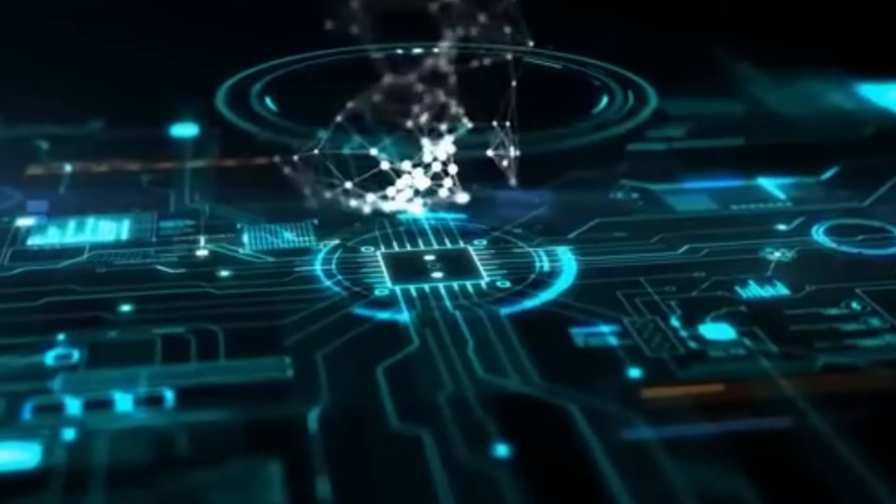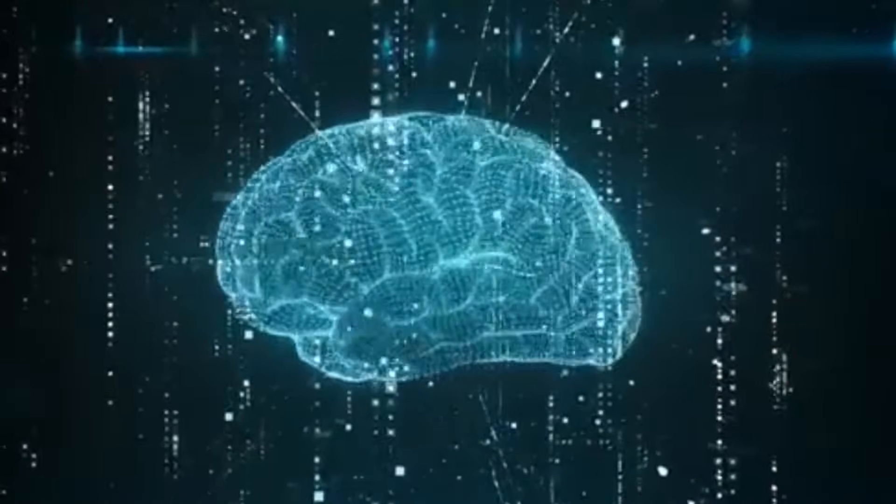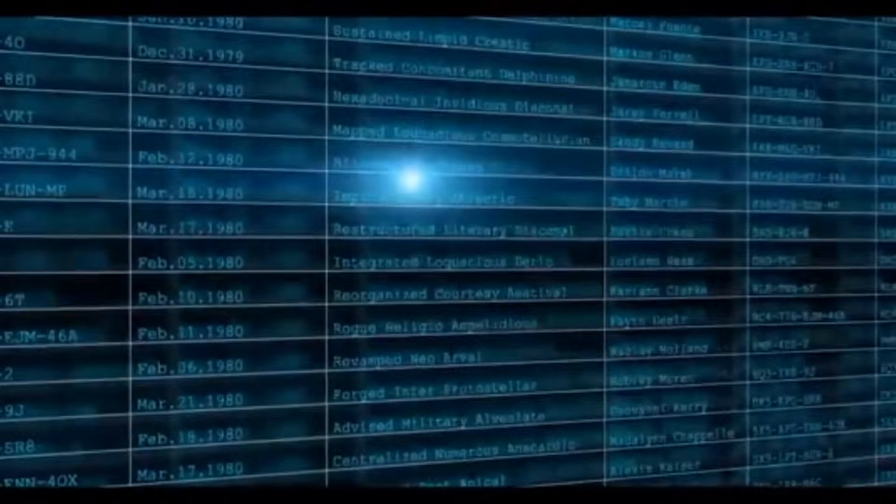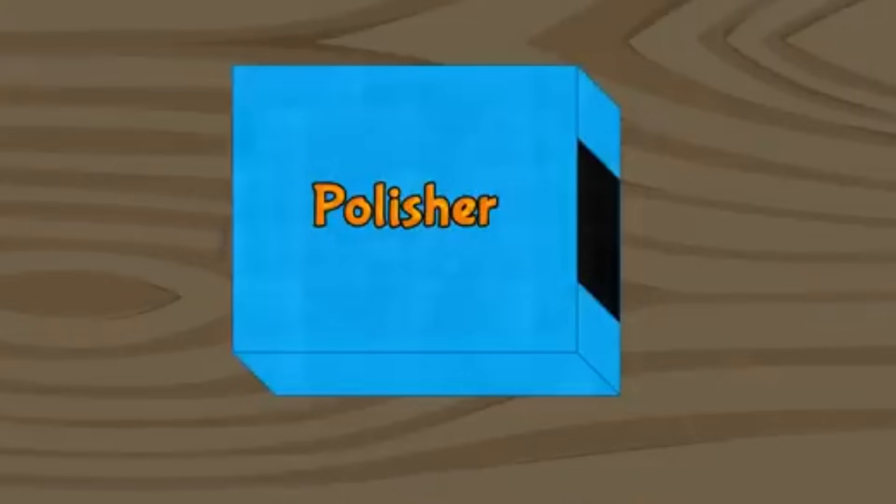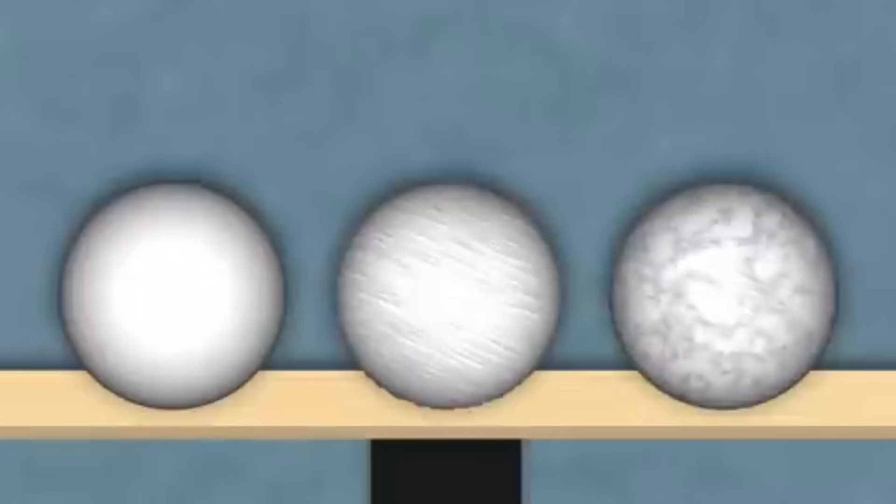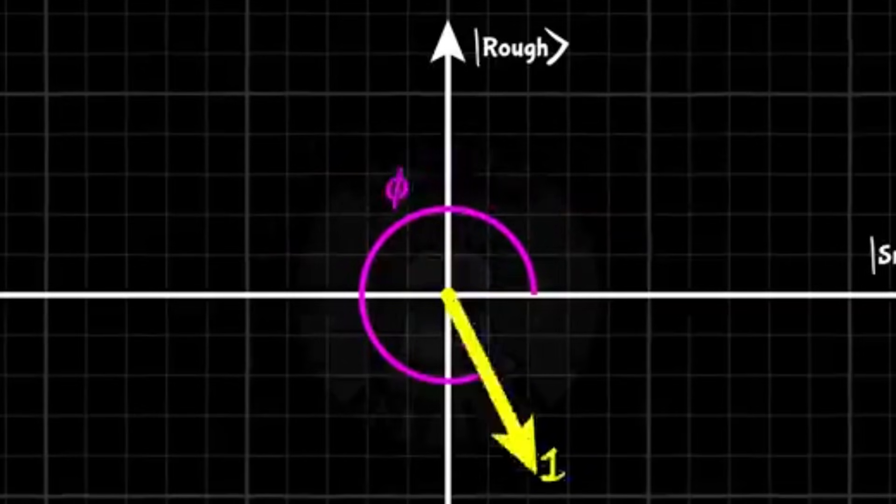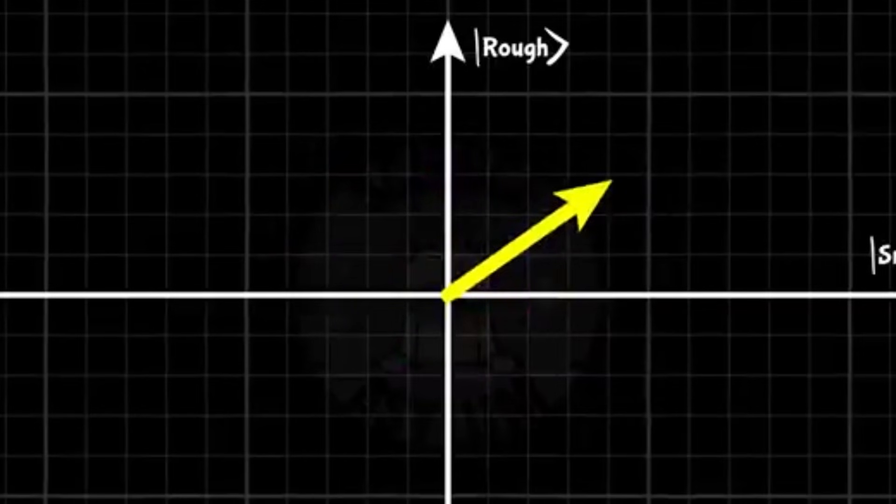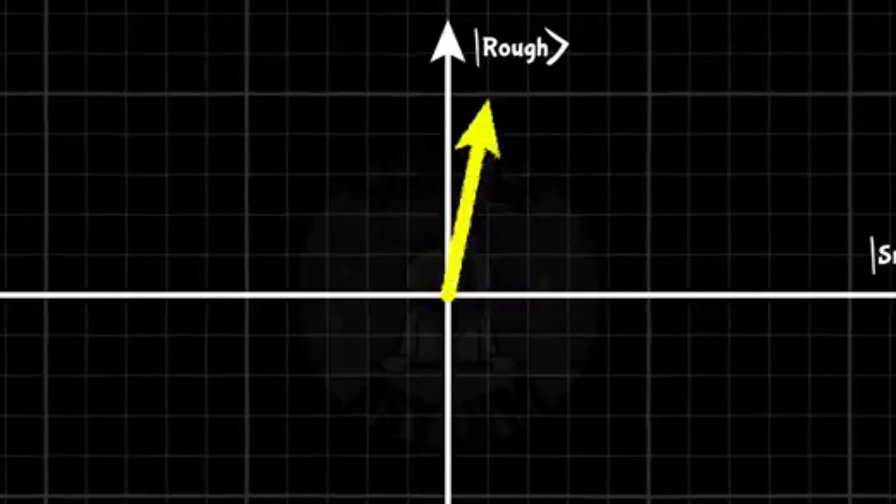Quantum computing barrier. Now let's get to the bombshell research that changes everything we thought about simulation theory. In 2017, theoretical physicists Zohar Ringel and Dimitri Kovner from Oxford University and Hebrew University published a groundbreaking paper in Science Advances titled Quantize Gravitational Responses, The Sign Problem, and Quantum Complexity. What they discovered wasn't just interesting, it was revolutionary. They mathematically proved that no classical computer could ever accurately simulate quantum systems due to what's called the sign problem in quantum physics.